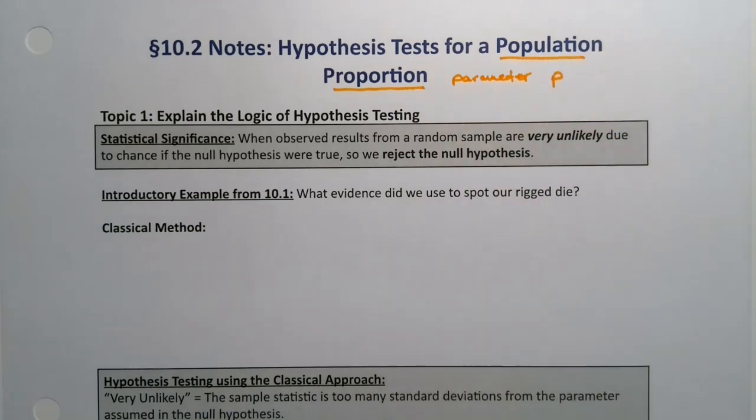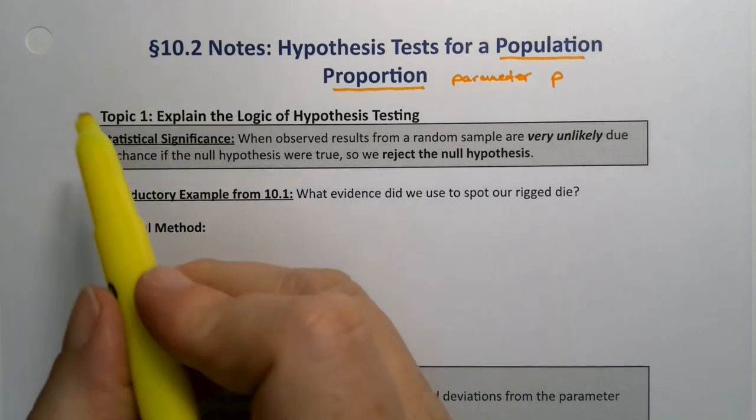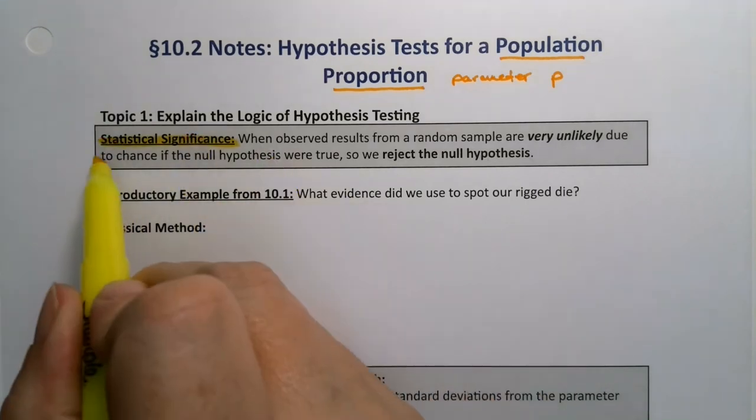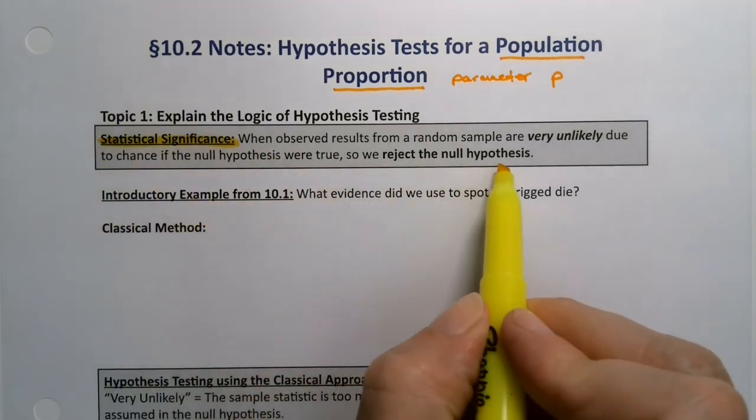Now remember, never lose sight of the two main methods and ideas behind hypothesis testing. First, we're always trying to prove the alternative. Statistical significance means that the observed results were very unlikely due to random chance, and so we reject the null hypothesis.